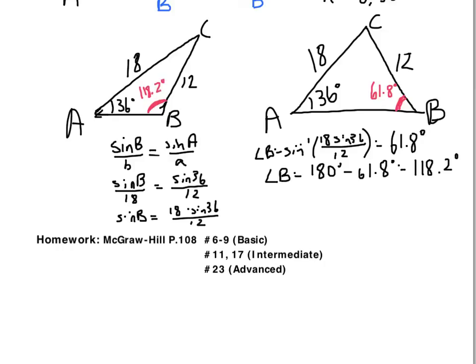From here, finding angle C in both cases, it's just a matter of taking 180 minus the other two angles. So, I'll do that on the left side. 180 minus 36 minus 118.2. That gives me 25.8 for angle C. And on the other side, 180 minus 36 minus 61.8 is 82.2 degrees. So, those are the two possible angle Cs. And I'll leave it to you. In either case, please find side C and bring that to class. Thanks very much, guys. I hope you enjoyed the ambiguous case. Thanks very much, guys.